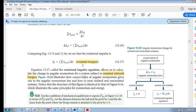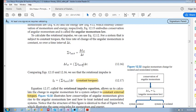Now, how do we calculate the rotational impulse? We calculate it in a very similar fashion to calculating impulse. If you recall from before, in a previous chapter, impulse is equal to the sum of the external forces times delta t for constant forces.